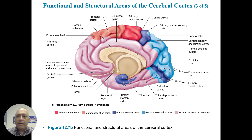Here's another look at some functional and structural areas of the cortex. We've got the premotor cortex, the primary motor cortex, the central sulcus, then the somatosensory cortex, and different association cortices.